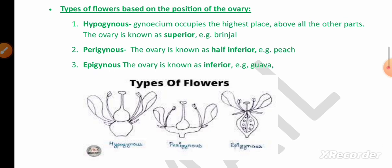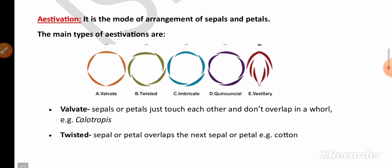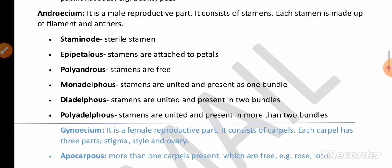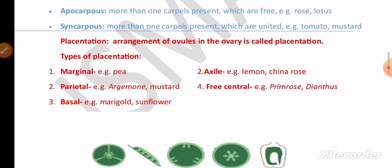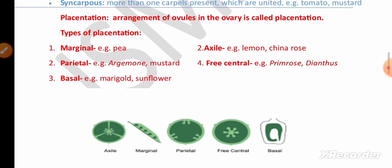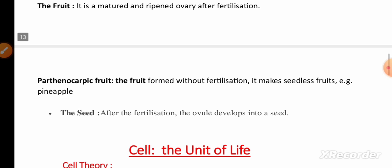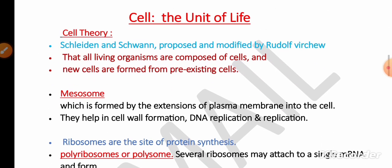Remember inflorescence and its types, actinomorphic and zygomorphic flowers, and types of flowers based on the position of the ovary. Remember terms like gamosepalous, polysepalous, gamopetalous, and polypetalous. Aestivation — definition and types — is very important for five marks. Also remember terms like epipetalous, polyandrous, monadelphous, diadelphous, polyadelphous, apocarpous, and syncarpous. Placentation and its types with examples is also a very important five-mark topic. Remember the definitions of fruit, seeds, and parthenocarpic fruit.